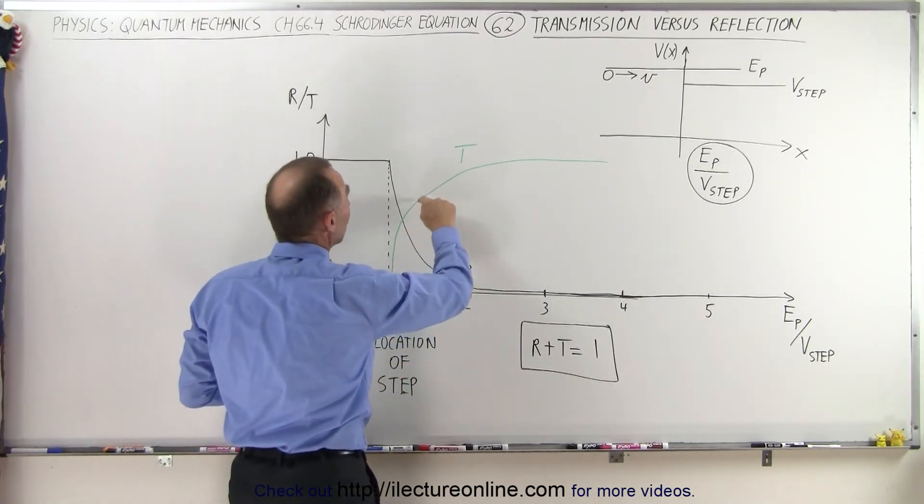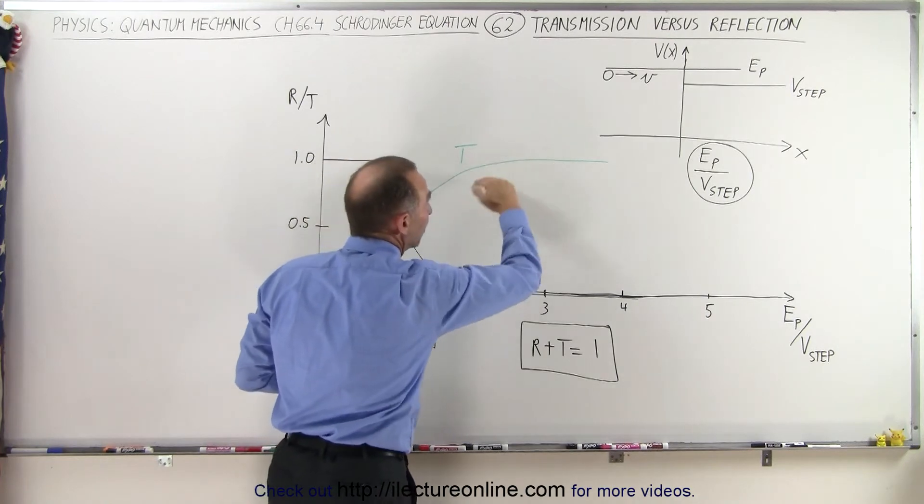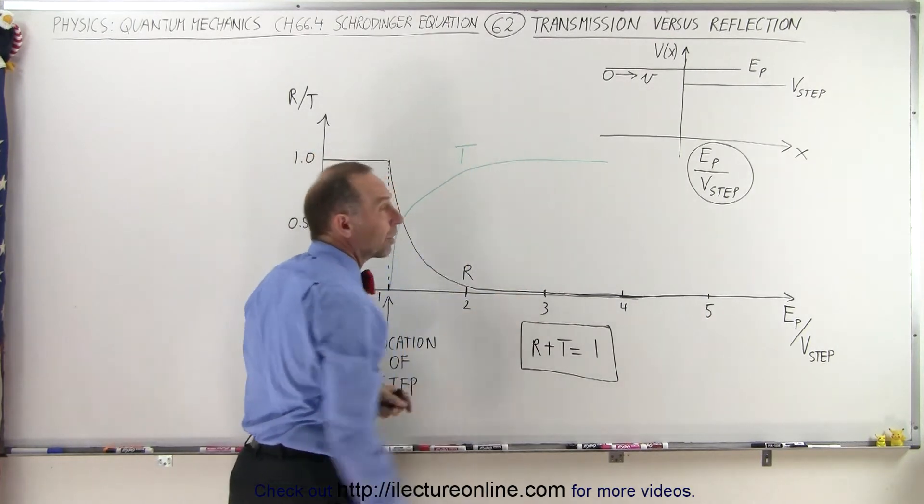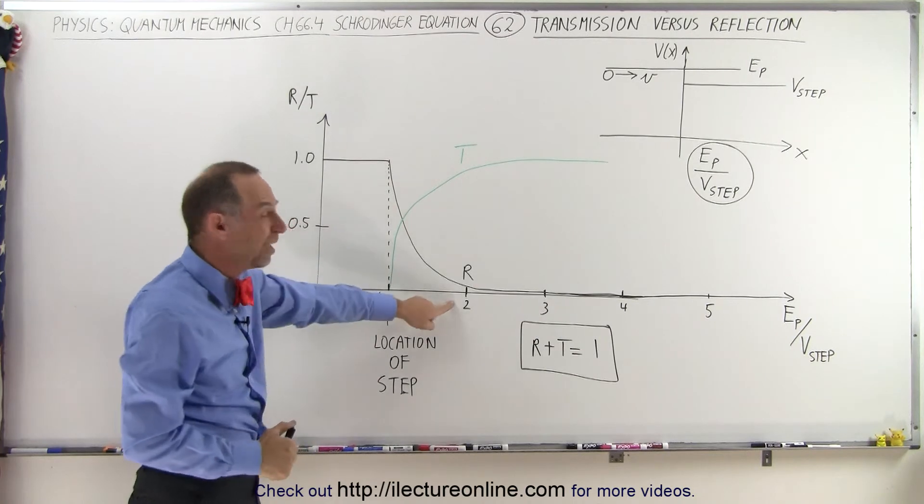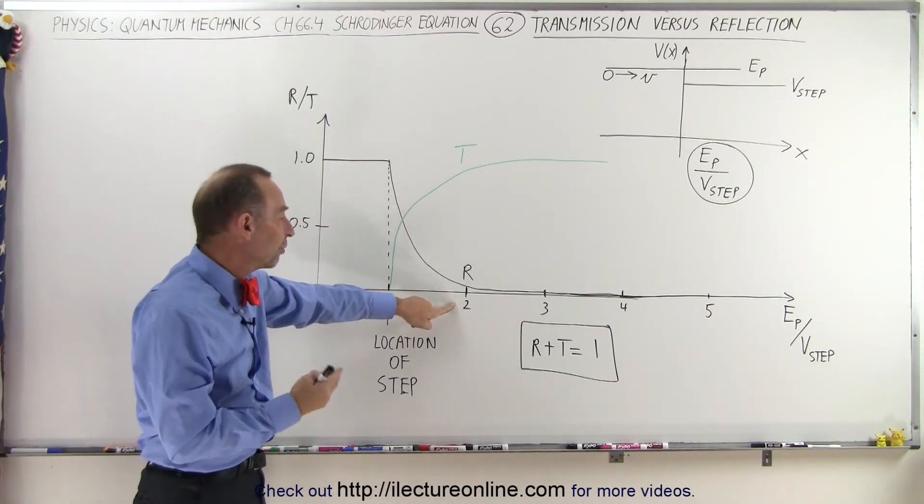We see that virtually 100% of the particles will be transmitted by the time we get to a ratio of 2 to 1.